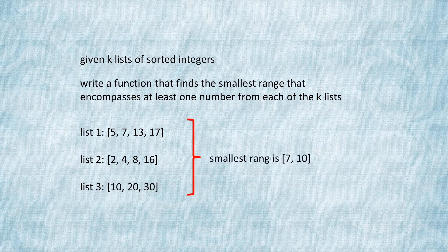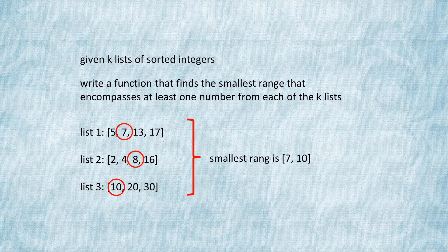In this example, the smallest range would be 7 to 10, as it contains 7 from the first list, 8 from the second list, and 10 from the third list.